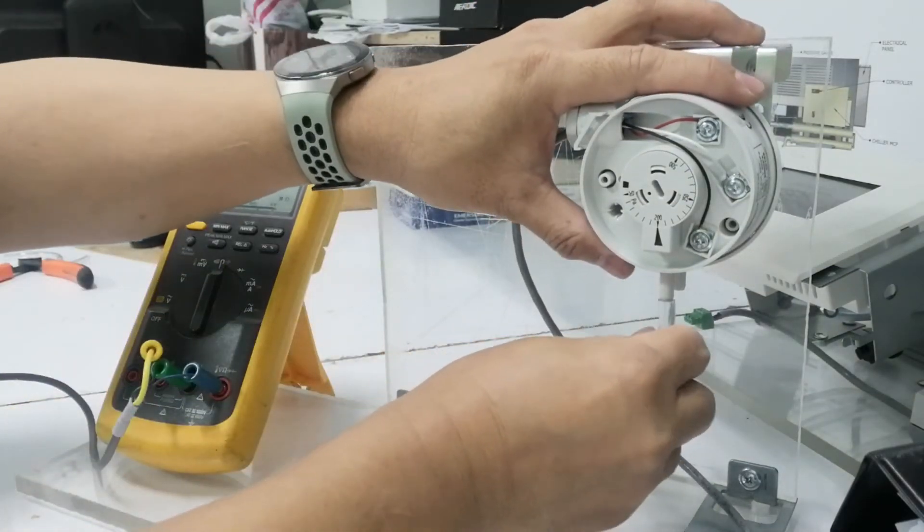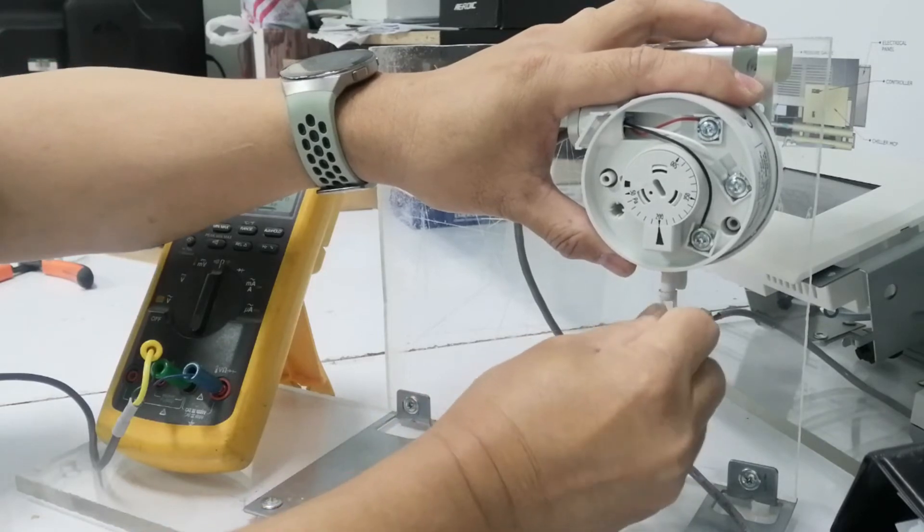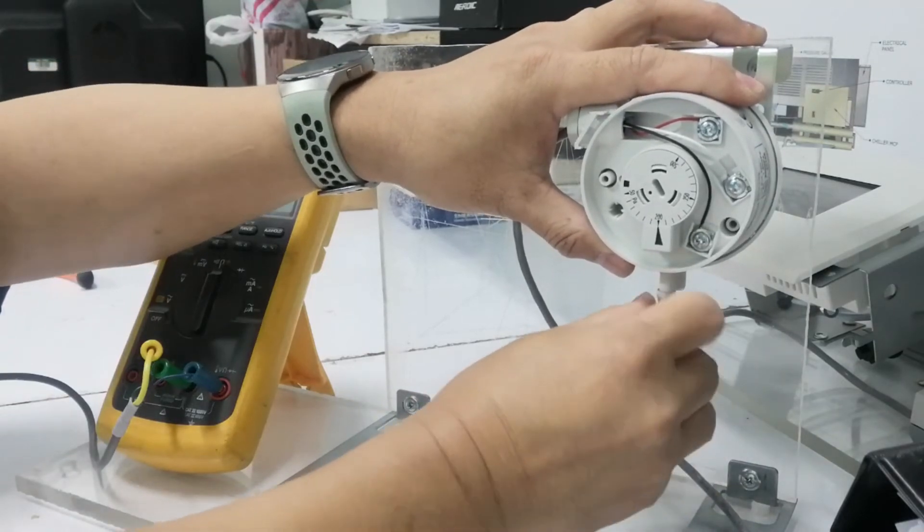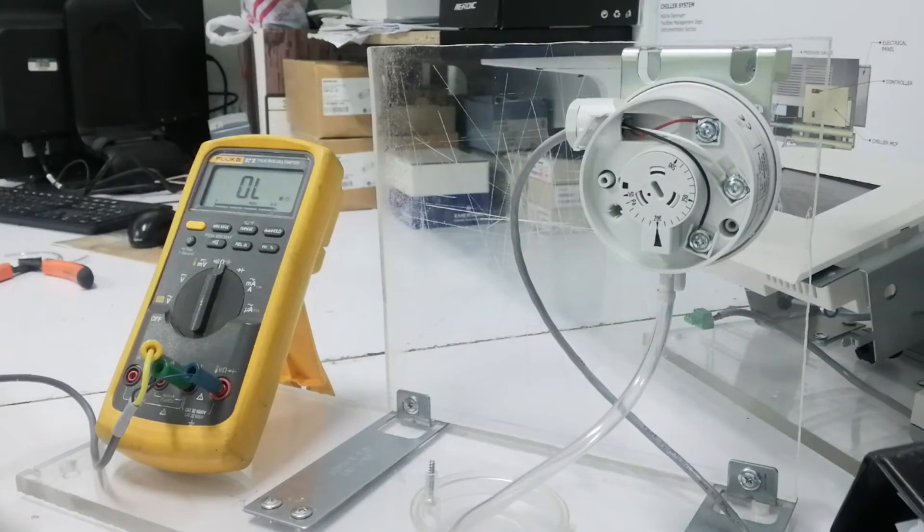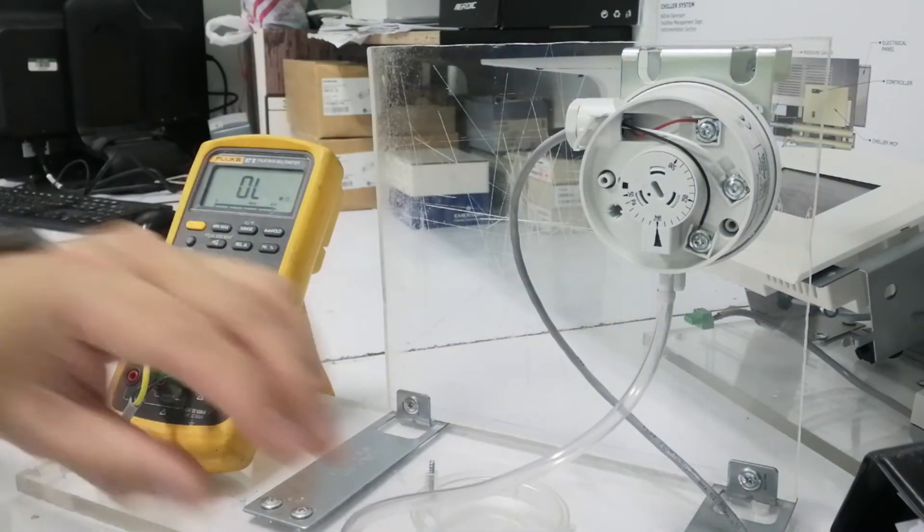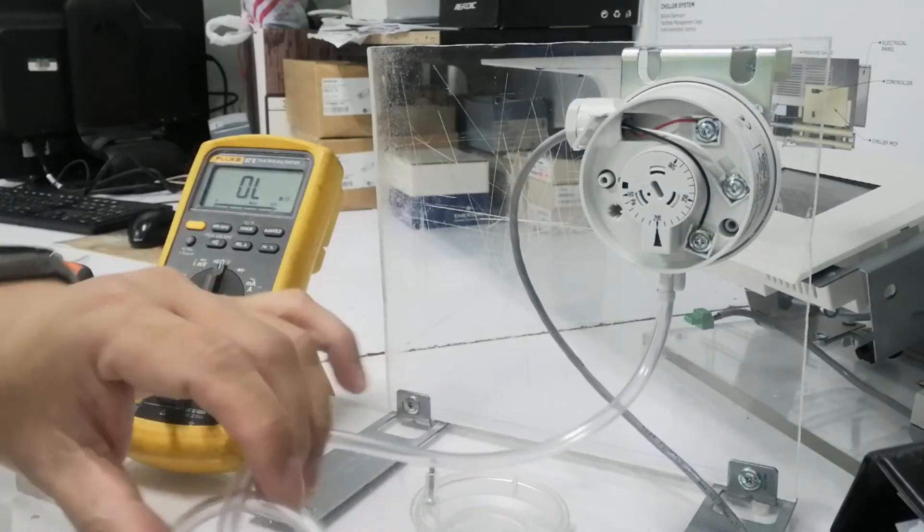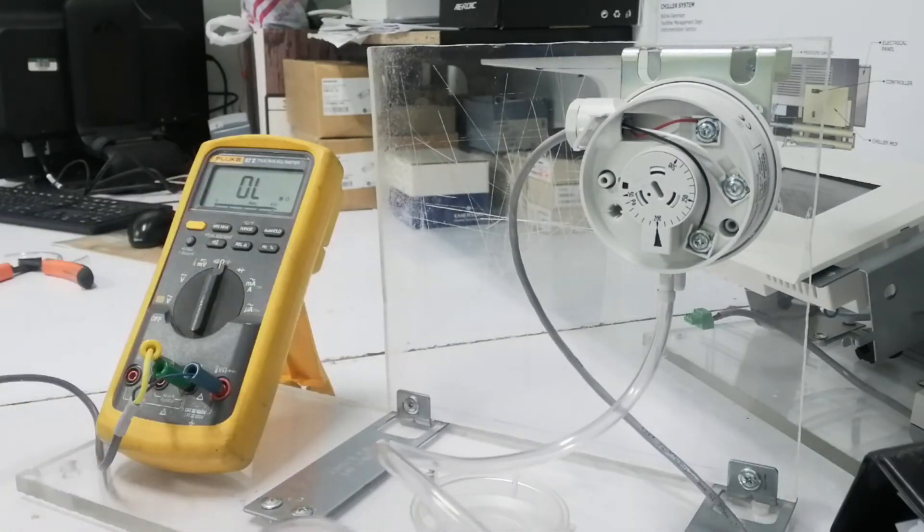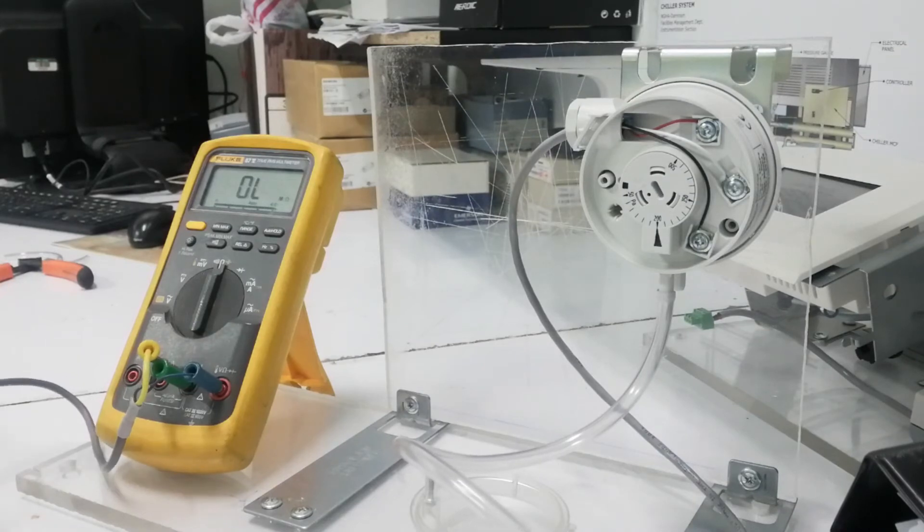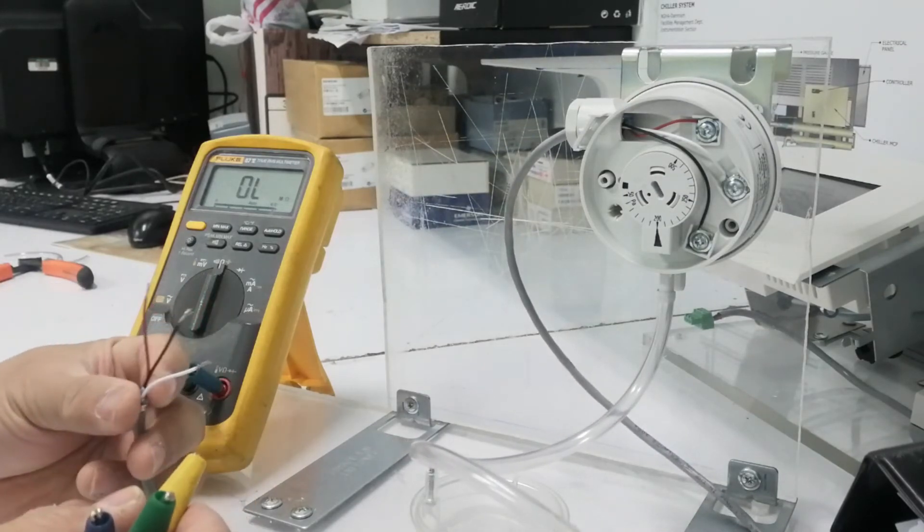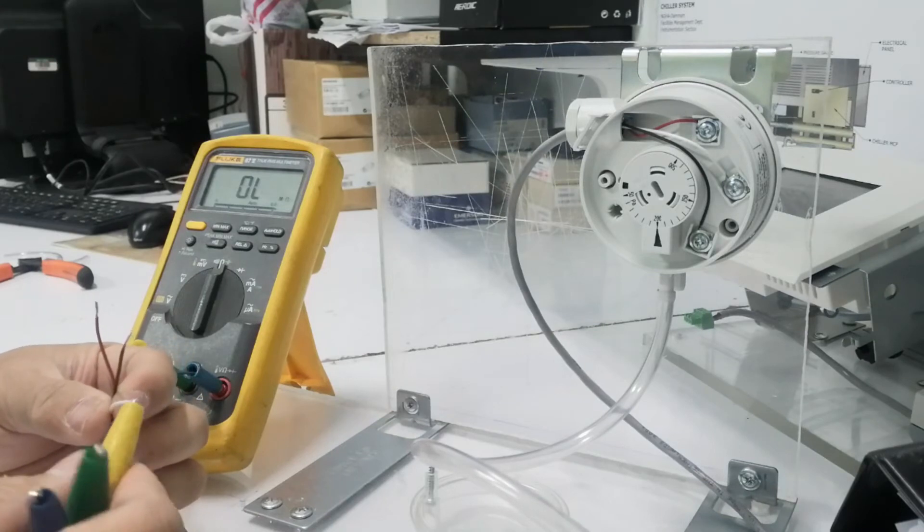Now, let's put on an air hose to the negative port of the sensor. Since we use negative port, we will apply negative pressure to the air hose. And we will use Terminal 1 and 3, which is normally open contact.